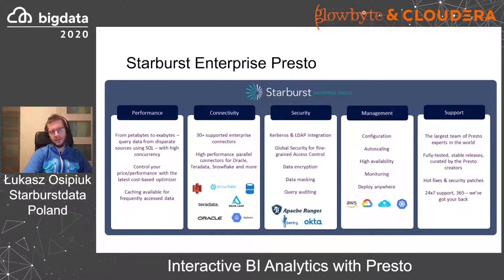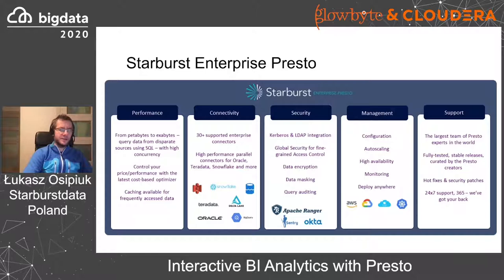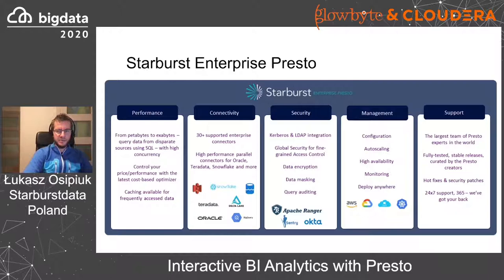Now a bit about Starburst. We are the enterprise Presto company — in a sense, a commercial arm behind the open source project, much like Databricks is for Spark. The value we bring to enterprise customers is around simplifying usage of Presto by providing security enhancements and integrations like data encryption, masking, permissions, integration with LDAP, Okta, Apache Ranger, and other security protocols. In enterprises, you typically have additional connectivity needs — querying Oracle, Teradata, DB2, Snowflake, etc. — all packaged in the enterprise distribution of Presto that Starburst offers.